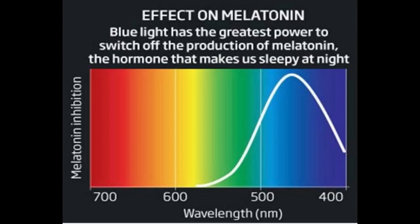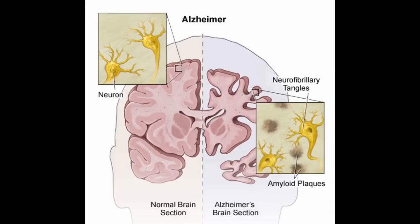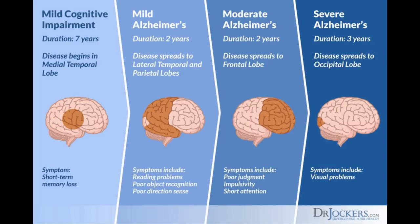Blue light at night really is quite scary stuff — it's going to shut down melatonin production. Melatonin is the sleep hormone and one of the most powerful antioxidants, and it helps conduct many repair processes in the brain and body. If you inhibit melatonin, you're going to lower growth hormone, which makes it more difficult for you to burn fat and build muscle. You will also prevent the brain from clearing out the toxins that accumulate during the day. There are proteins called beta-amyloids that are associated with Alzheimer's and Parkinson's, and if you don't remove them during sleep they begin to accumulate even more.